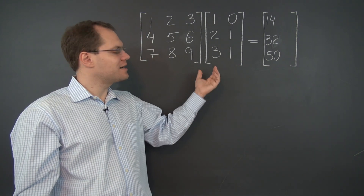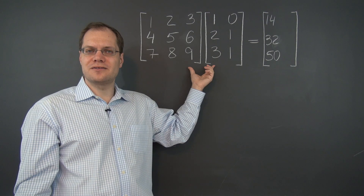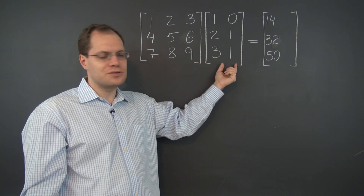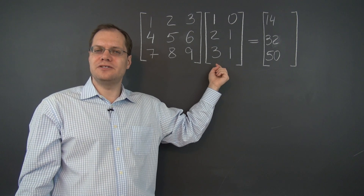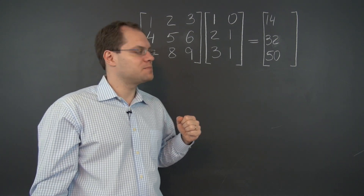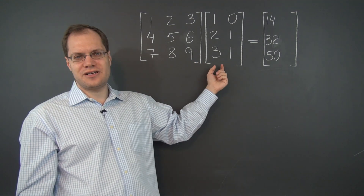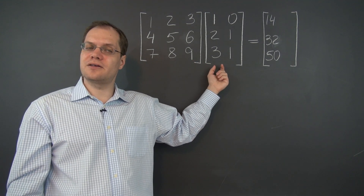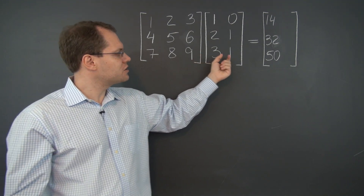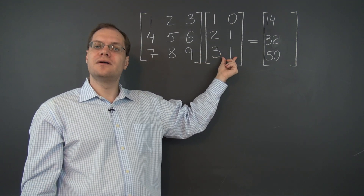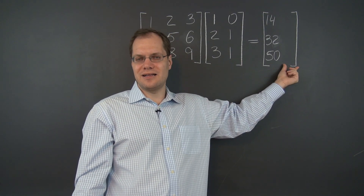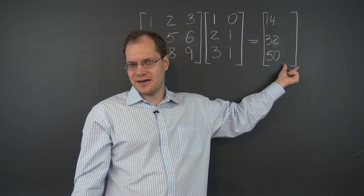You can always break up a larger matrix product into smaller matrix products where you treat one column from the matrix on the right at a time. So we're done with one half of this problem. Let's finish the other half. We now have to calculate another linear combination of these three columns where the coefficients come from this column, and the answer will go in as the second column of the matrix on the right-hand side.